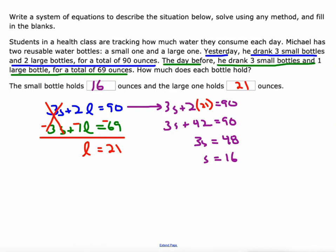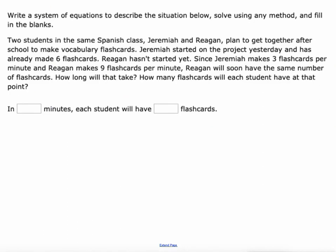One more time, in these last two, I'm going to do the same thing, but there's some certain little tricks here that we got to pay attention to. All right, we got two students in the same Spanish class, Jeremiah and Regan. They plan on to get together today after school to make vocabulary flashcards. Jeremiah has already started the project and has made six, has already made six flashcards. Regan hasn't started yet. Okay, so those are Y-intercepts. Since Jeremiah makes three flashcards per minute, and Regan makes nine flashcards per minute, Regan will soon have the same number of flashcards. So since Regan's working faster, he's going to catch up eventually.